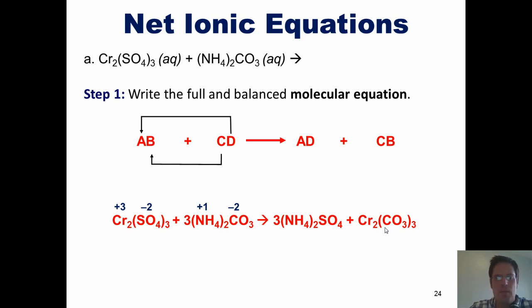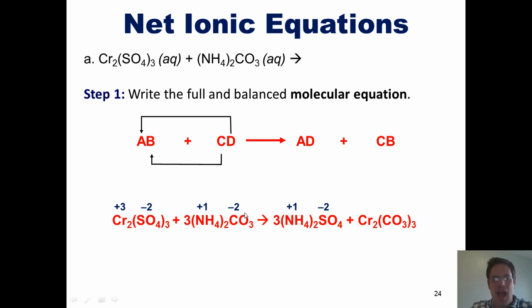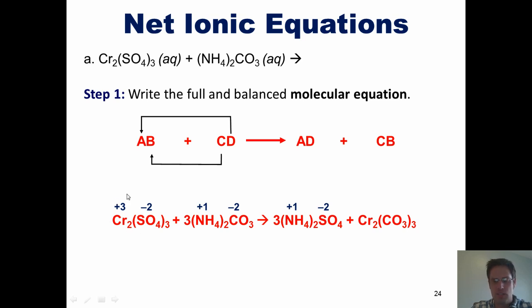Ammonium has a charge of plus 1, and sulfate has a charge of minus 2. How many ammoniums, each with a plus 1 charge, does it take to neutralize a total negative charge of minus 2? It takes two of them. Hence, we put parentheses around ammonium and a subscript 2. Carbonate has a charge of negative 2, and in this example chromium has a charge of plus 3.